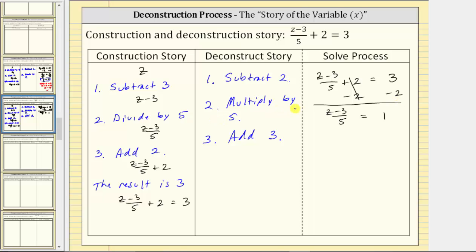Step two is to multiply both sides of the equation by five. On the left side, multiplying by five and dividing by five undo each other. We can think of this as five over one times the fraction, and five divided by five simplifies to one, leaving us with z minus three on the left. On the right, one times five is equal to five.